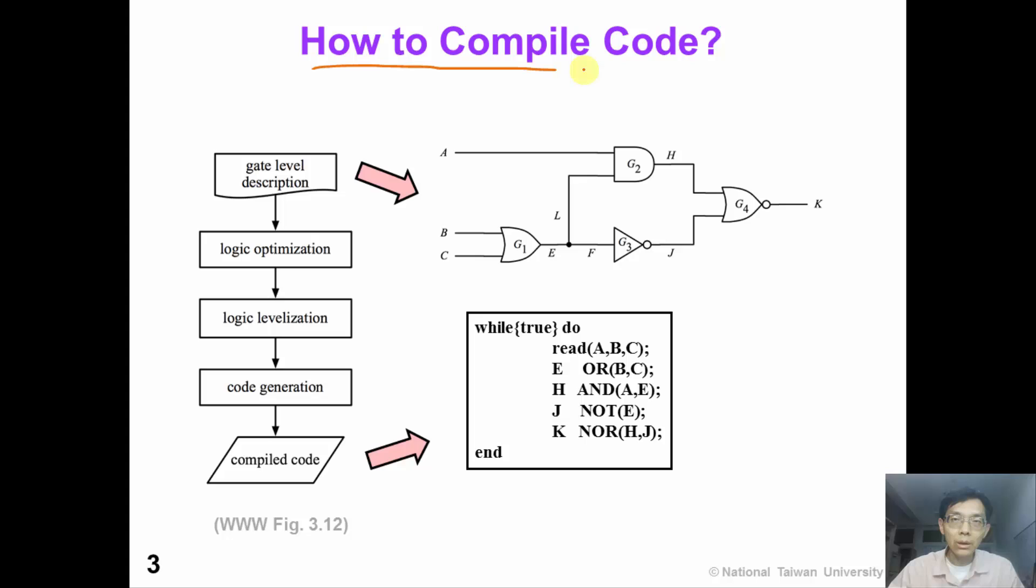So the key is how can we compile this circuit into a code? In our textbook, we have this flowchart. Given a circuit level description of the circuit, we first run the logic optimization to simplify our circuit. Then we levelize the logic in correct order and then we generate the code. Eventually, we will obtain a sequence of code like this. So now let's explain these three steps in detail.